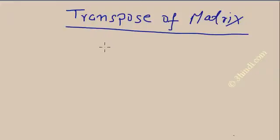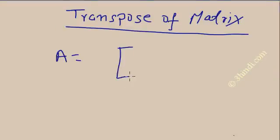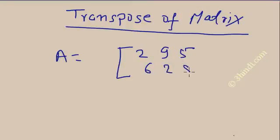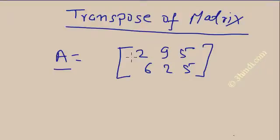The basic idea of the transpose matrix is that whenever you remove a row and make it a column, it becomes the transpose. Suppose matrix A is, for example, [2,9,5] and [6,2,5]. The procedure to make the transpose of a matrix is: just remove the row and make it a column.